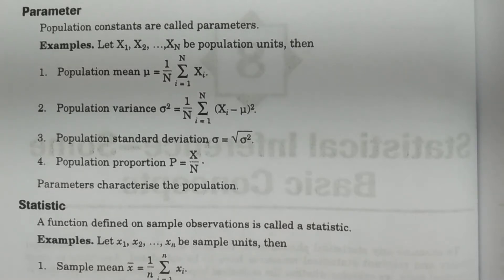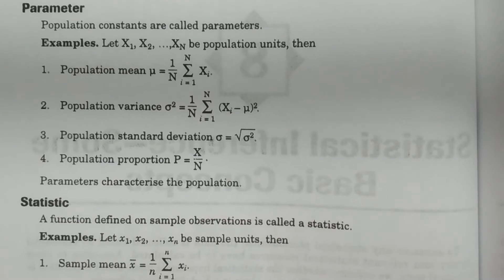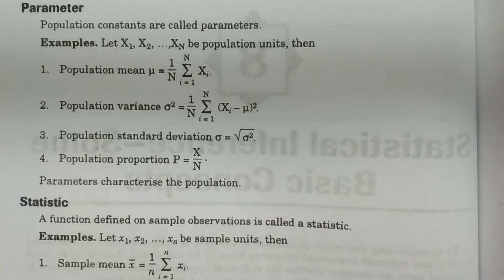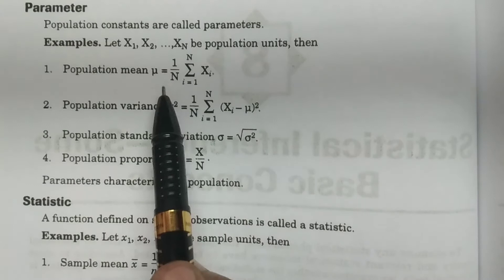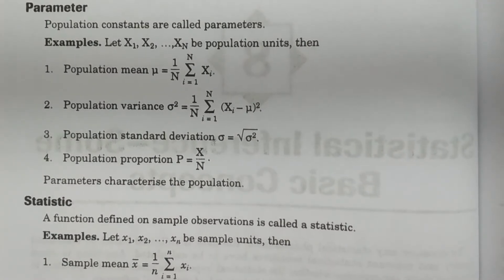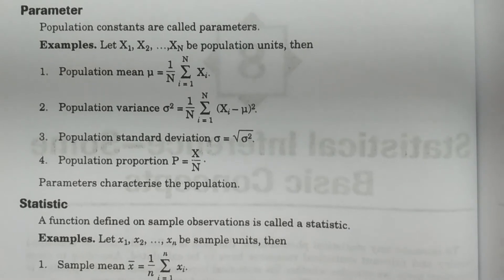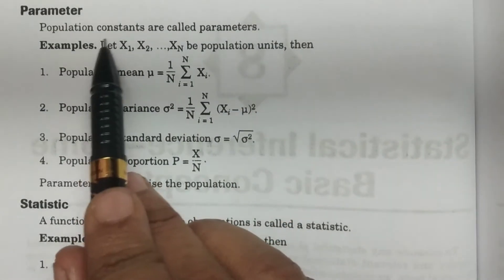What is parameter? We have discussed already population and sample. Population is nothing but the total number of individuals or things or items under a statistical investigation. The notation of population is capital X1, capital X2, and so on. Based on these units, whatever measures are obtained are nothing but parameters. The population constants are called parameters.